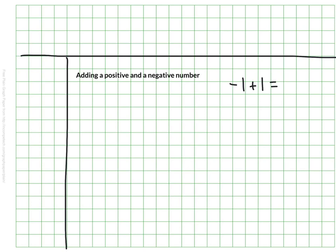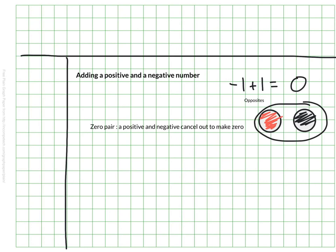So here's our reminder. Negative 1 plus 1—we know that these are opposites. So we know that the additive inverse property tells us that this equals zero. Any number plus its opposite makes zero. And if I'm looking at my chips, it means I would have one red chip and one black chip. And together, if I kind of group them together, this makes what we call a zero pair. A zero pair is when you have a positive and a negative and they cancel each other out to make zero.